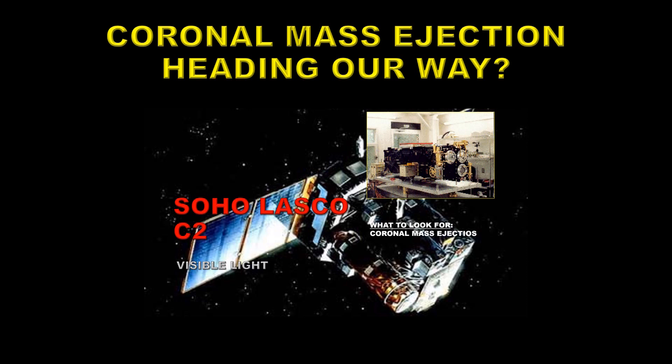Not radially, interestingly enough. So now, does that mean that we had a coronal mass ejection? One of the ways of looking at that is to use a coronagraph. There is a coronagraph operational on the SOHO spacecraft — the LASCO instrument C2. We'll take a look at that movie right now and see whether there was a coronal mass ejection.